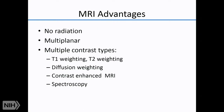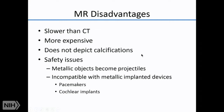MRI has a number of advantages: no radiation, inherently multi-planar, and many pulse sequence tricks — T1 weighting, T2 weighting, diffusion weighting, contrast enhancement, and spectroscopy. These are just the big ones; it's a way of obtaining a lot of information from tissue. It is much slower than CT — a chest/abdomen/pelvis scan takes 30 to 40 minutes on MRI versus two to three seconds on CT.